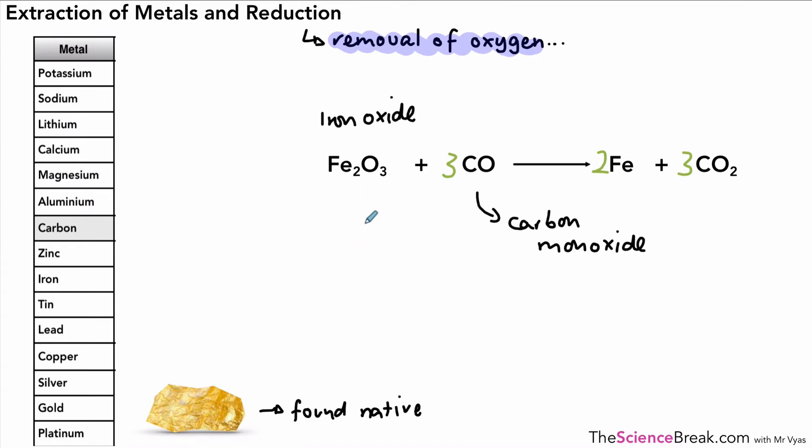Now, in our equation here, what's being reduced? Well, if you look at the iron oxide, it becomes iron as a result of this chemical reaction. So it's the iron oxide that is reduced. In other words, that's the compound that's had oxygen removed from it.